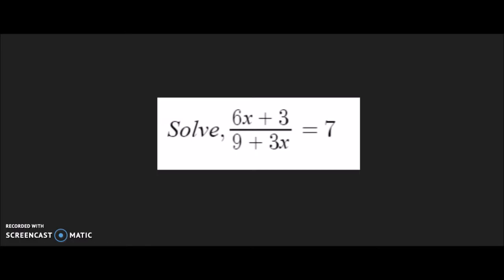For our second problem, we have to solve for 6x plus 3 over 9 plus 3x equals 7. Using the previously listed steps, we can solve these problems using graphs and tables easily.